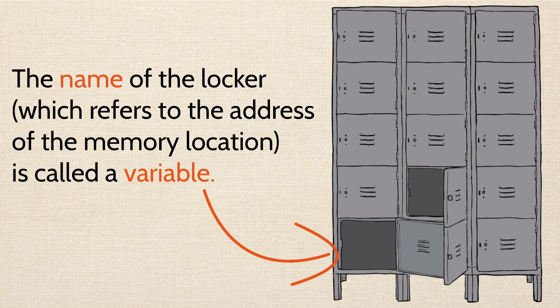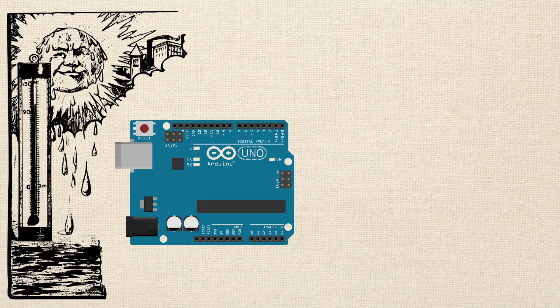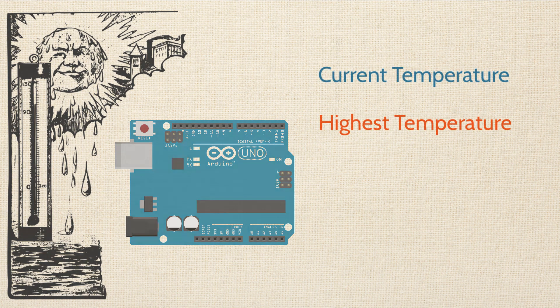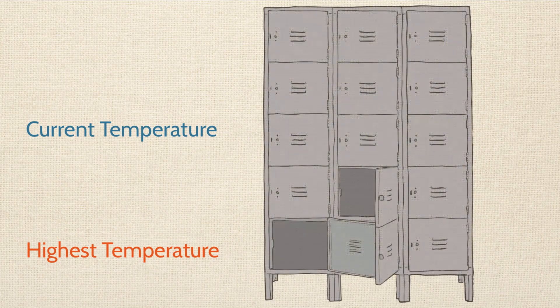Now technically speaking, a variable is the named address of a specific location of memory. But rather than get caught up in the technical details, let's dive into the practical use of variables. Going back to the temperature project: what we want to do is record the highest temperature during a 24-hour period. So for our program, I'm going to need to store those two key pieces of information — the current temperature and the highest temperature.